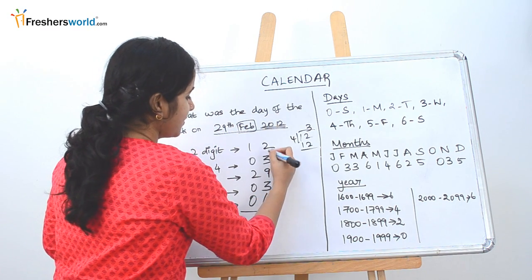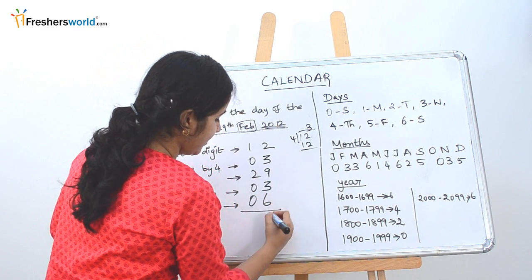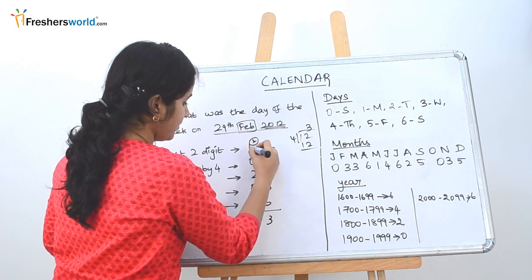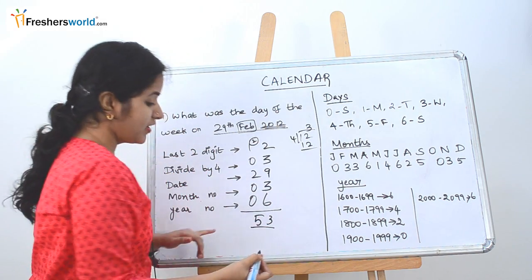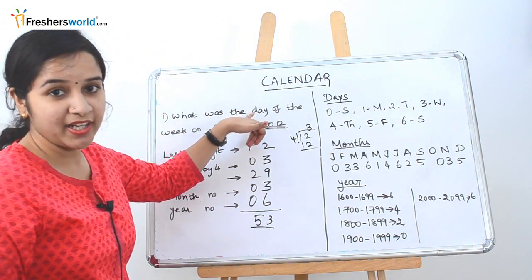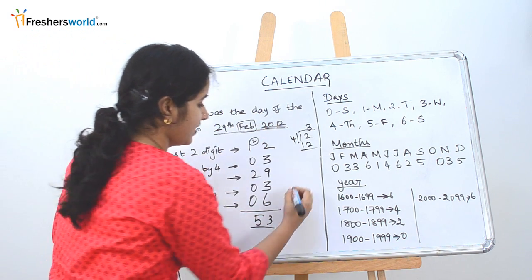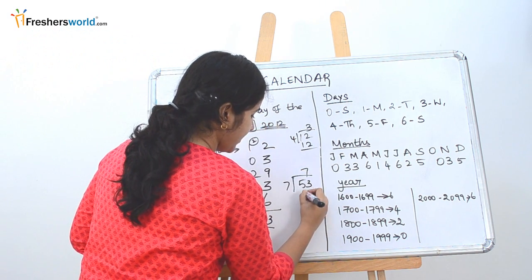Now add all these. 3 plus 2, 5. 14, 17, 23. So what is the last step? As we know they've asked for the day, we divide 53 by 7. 7, 7th of 49. So 4.